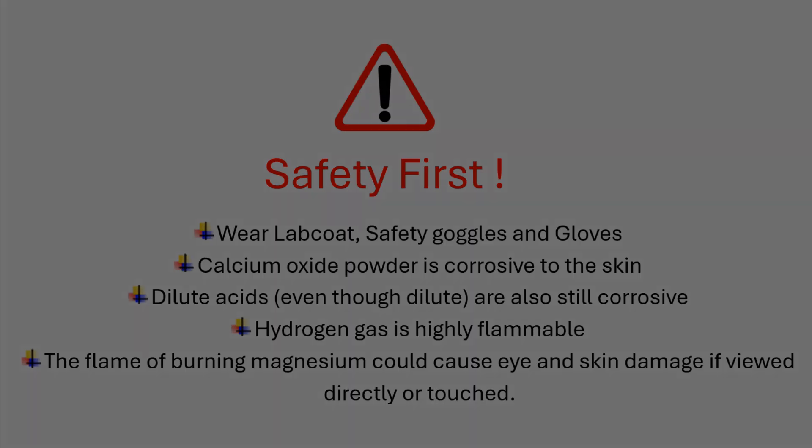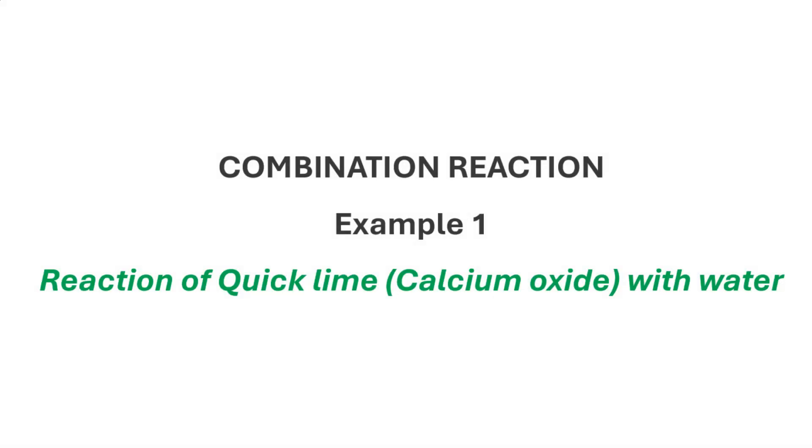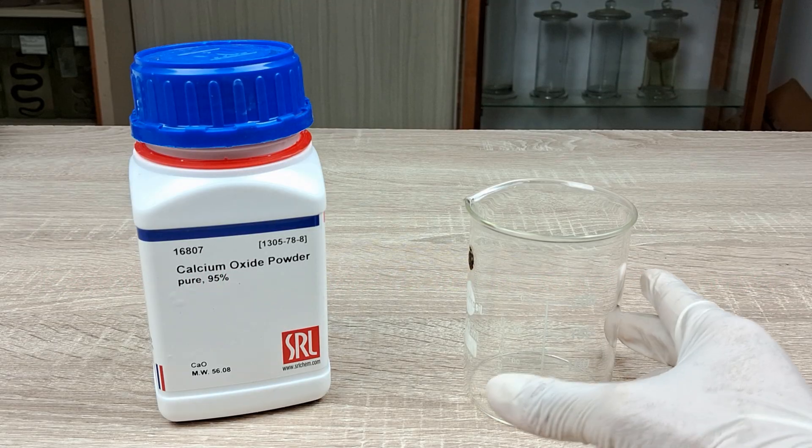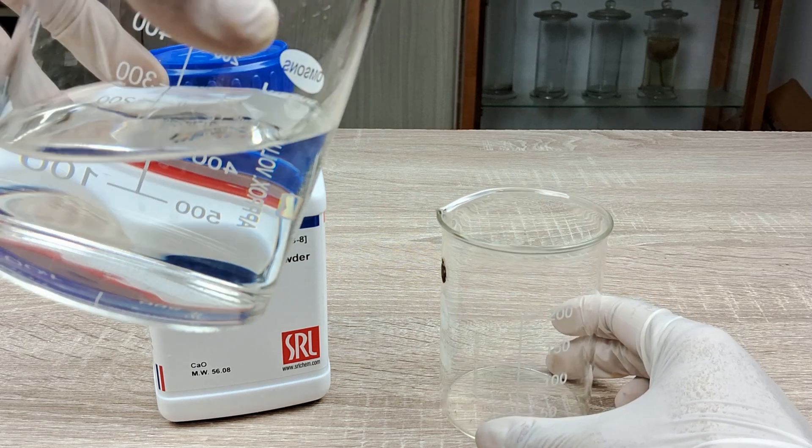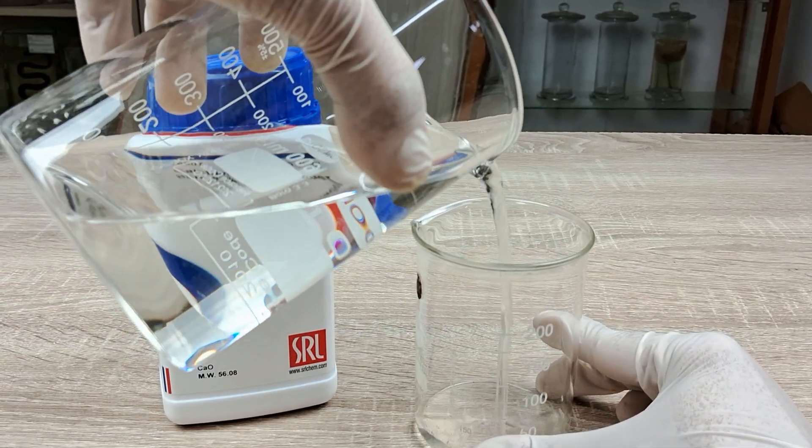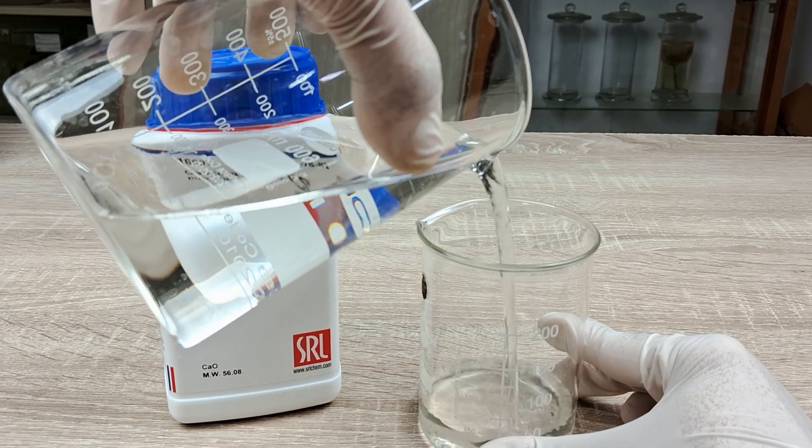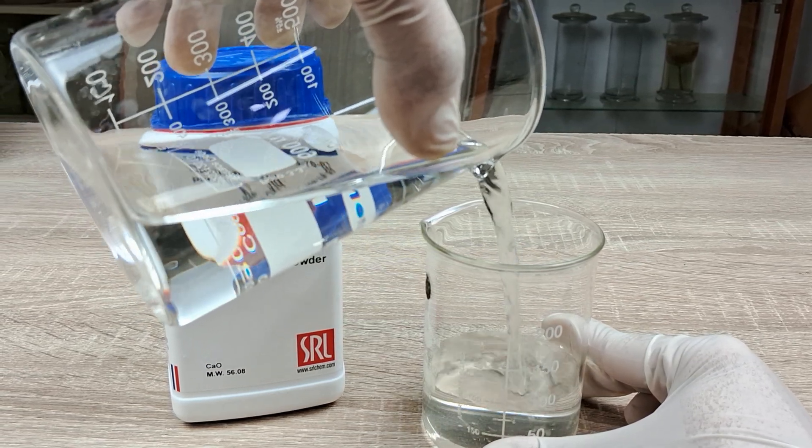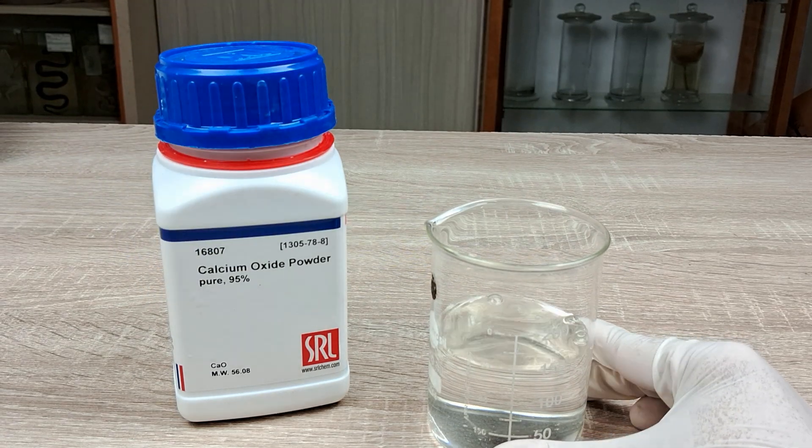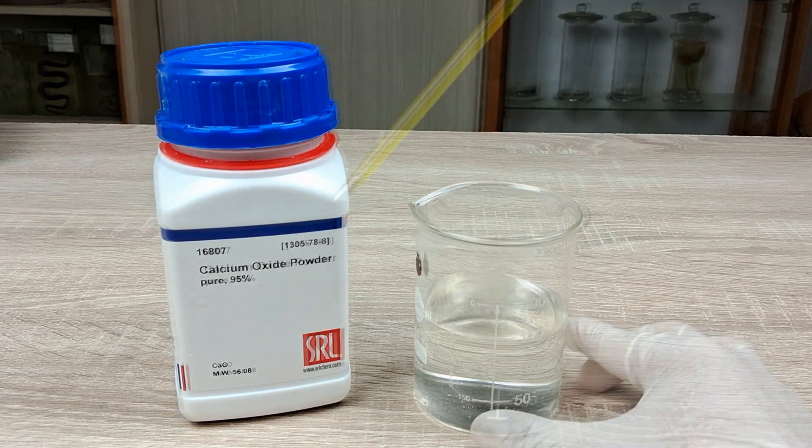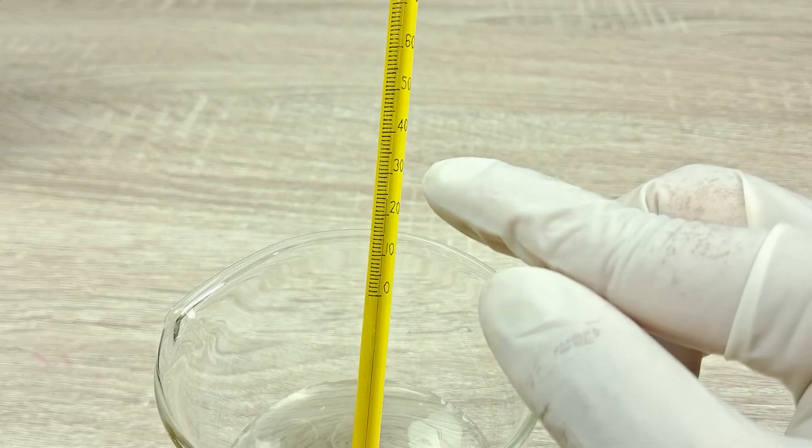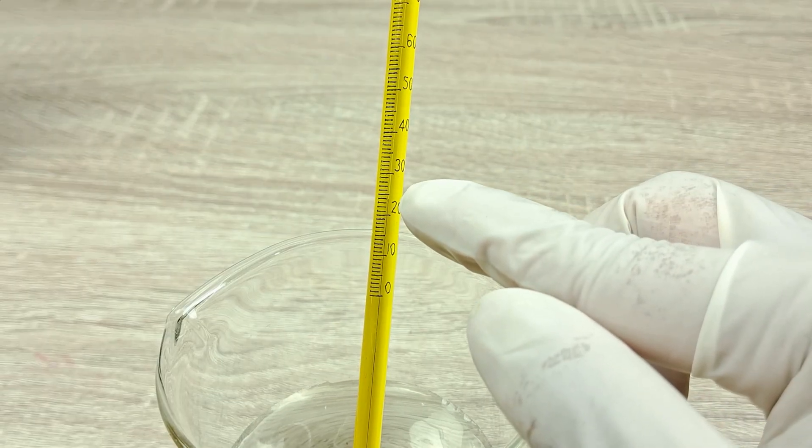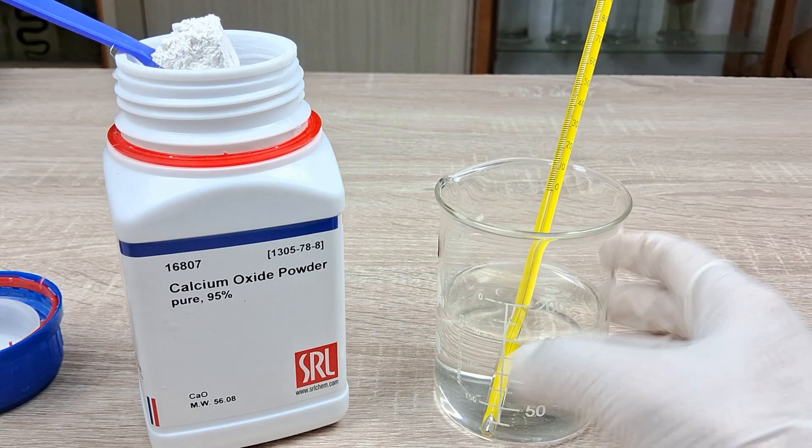To perform this experiment, take a 250 ml borosilicate glass beaker and fill it with approximately 100 to 150 ml of water. Introduce the laboratory thermometer and record the temperature of the water.